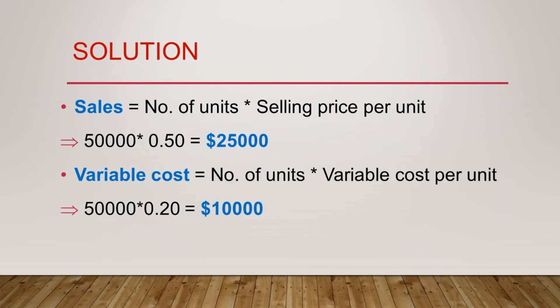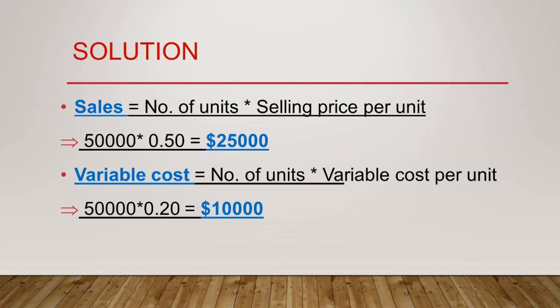Let's get started with the solution. First we find sales: since we have the number of units and the selling price per unit, we multiply them — 50,000 units × $0.50 — to get sales revenue of $25,000. Moving to variable cost: we have the number of units and variable cost per unit, so we convert it to get a total variable cost of $10,000. We will use both figures in further calculations.